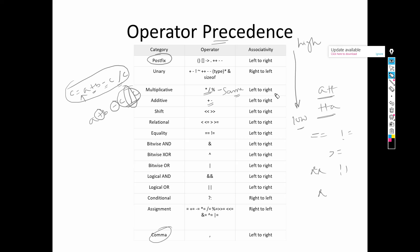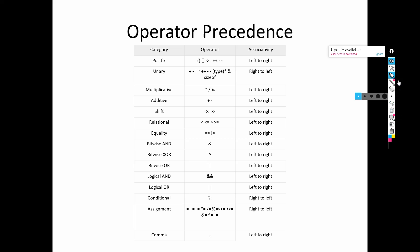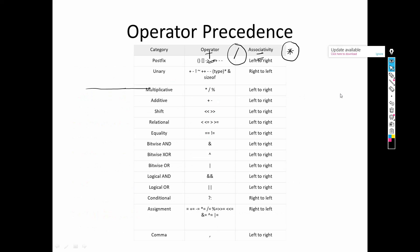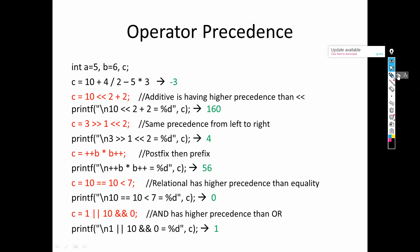Let's take some examples to make it easier to understand. The example is: 10 + 4 / 2 - 5 * 3. The operators here are plus, division, minus, and multiplication — all arithmetic operators. We know that in arithmetic operators, division and multiplication have higher priority than addition and subtraction.